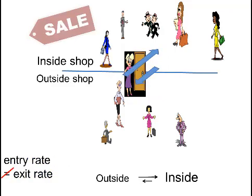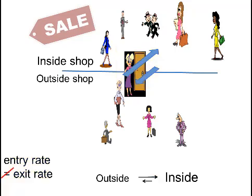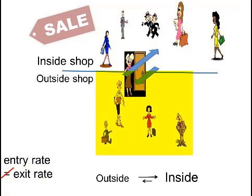Then the shop announces a sale. This will disturb the equilibrium because now more people will enter than leave. As a result, the number of people in the shop will increase and the number of people outside the shop will decrease.